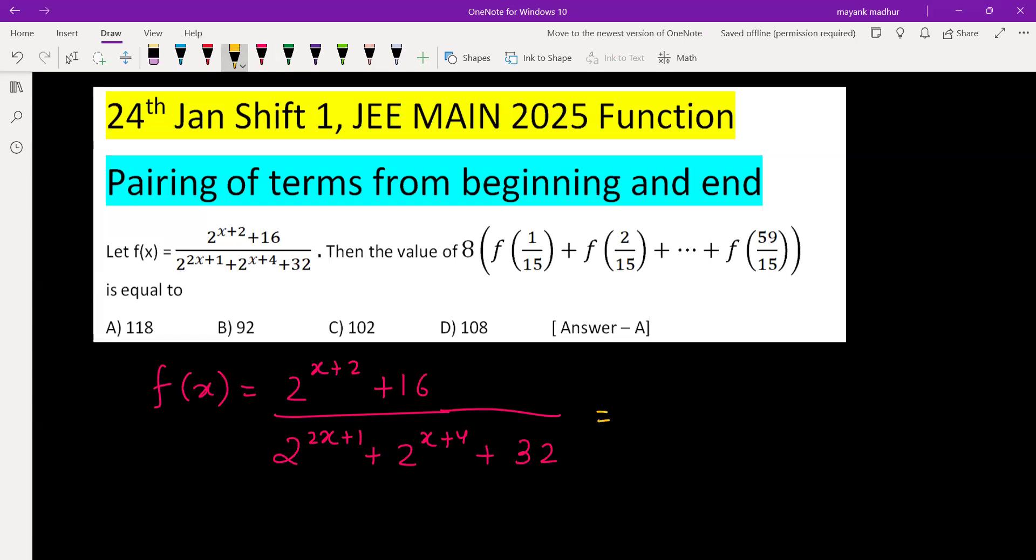We can take 4 common from the numerator because a raised to m plus n is a raised to m into a raised to n. This will be 2 raised to x plus 4 divided by, here we can take 2 common, so this is 2 raised to 2x plus 2 raised to x plus 4.